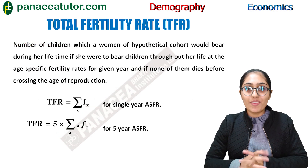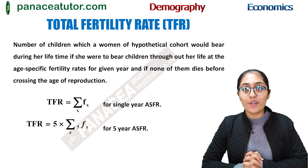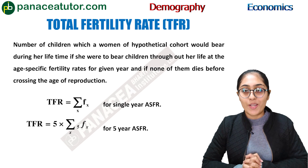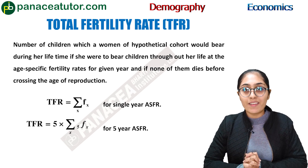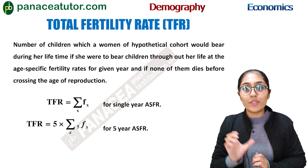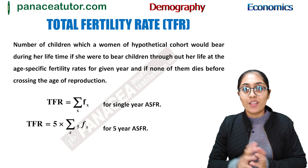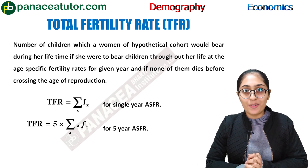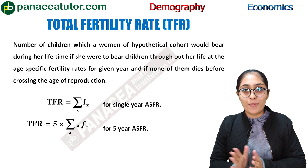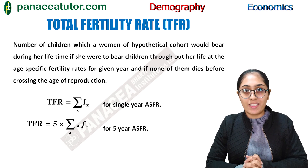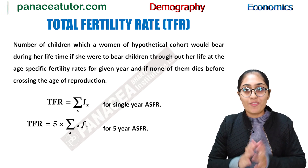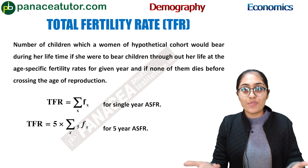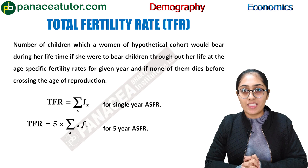Next we will study total fertility rate. It measures the fertility rate of a hypothetical cohort of women. It is calculated by the summation of age specific fertility rates — when we add all age specific fertility rates together, it becomes the total fertility rate.